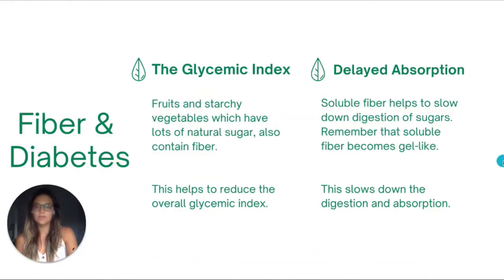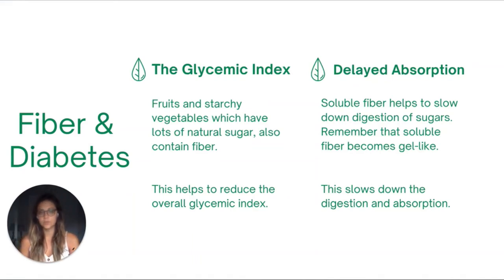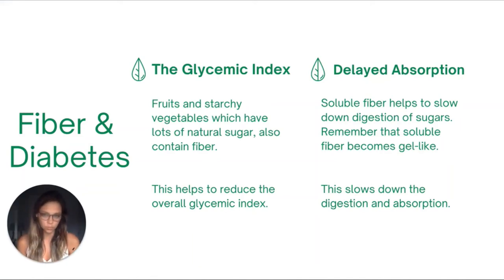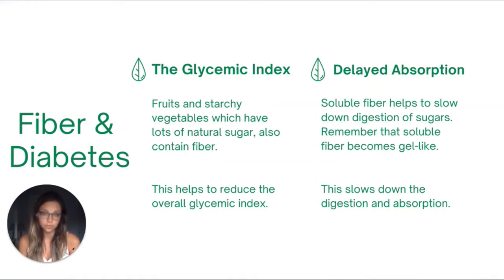Now let's talk about how fiber specifically relates to diabetes. The first way is through the glycemic index, which is a way we categorize foods based on how they will influence our blood sugar. Foods with a high glycemic index will spike our blood sugar, while foods with a low glycemic index won't cause it to spike as much. When we talk about fruits or starchy vegetables, they contain a lot of natural sugar, but they also contain fiber, and that fiber helps to reduce the overall glycemic index.